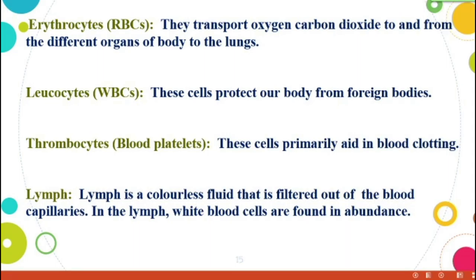The last one: lymph. Lymph is a colorless fluid that is filtered out of the blood capillaries. It looks like a watery substance. In the lymph, white blood cells are found in abundance — more numbers of WBC cells are inside the lymph.